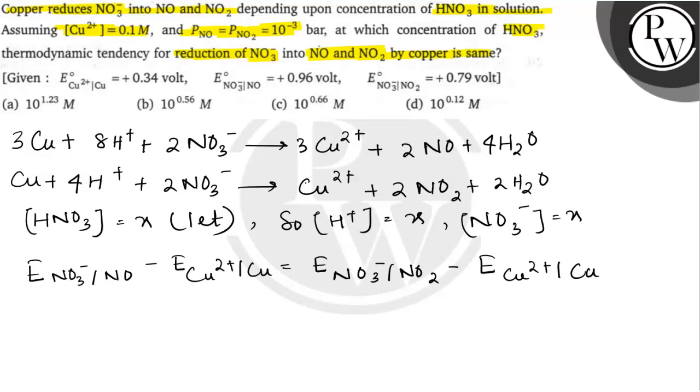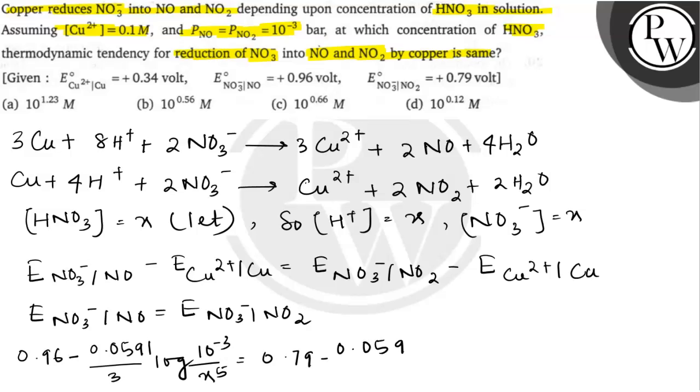This will be equal to 0.79 minus 0.0591 upon 2, sorry this will be upon, for second it will be upon 1.